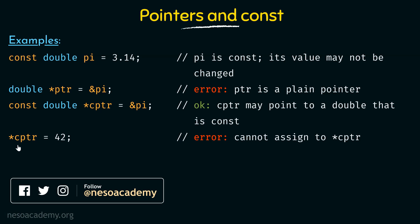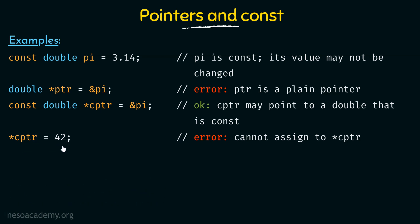Next, if we try to change the value of CPTR by writing asterisk CPTR equal to 42 — asterisk CPTR means the value stored in the object pointed to by CPTR, which is pi with value 3.14 — we are trying to change 3.14 to 42, but that will not be possible. As already stated, pointers to const cannot be used for changing the value of the object to which they point.